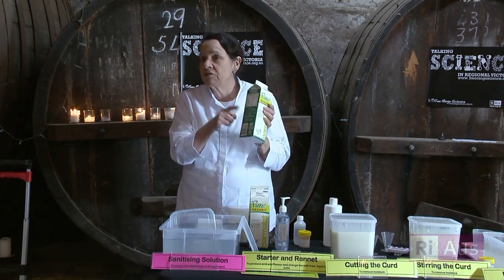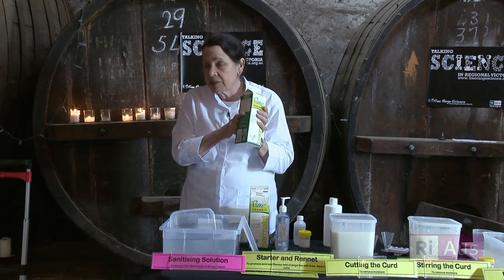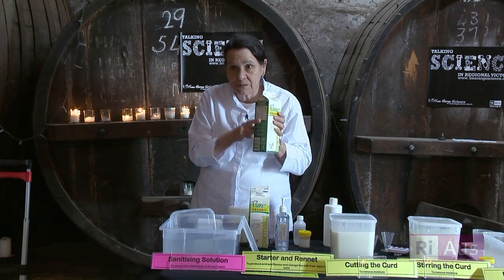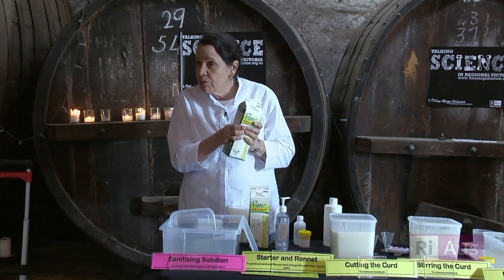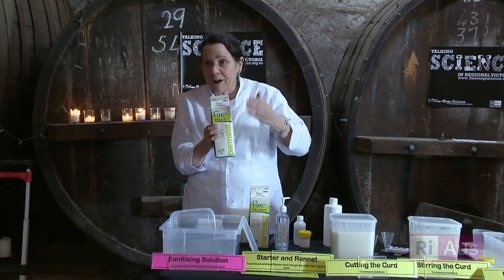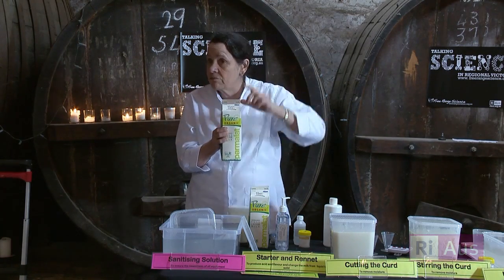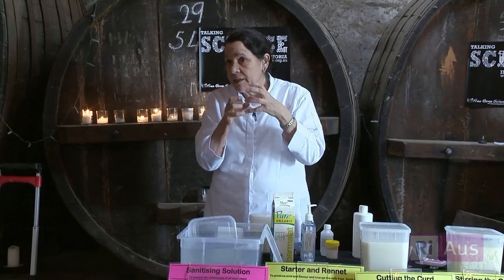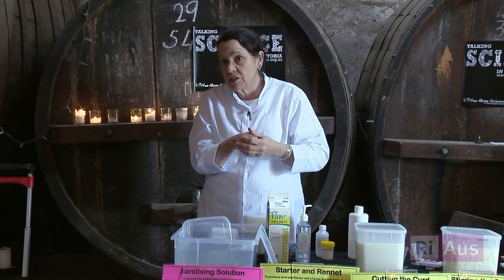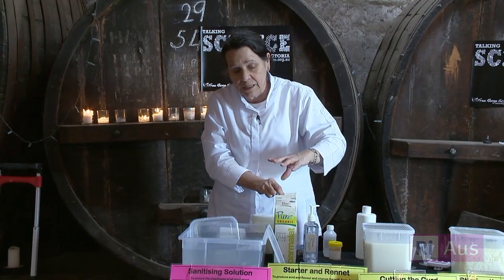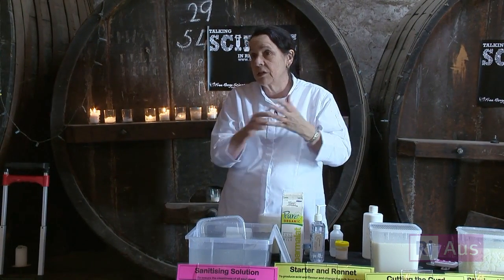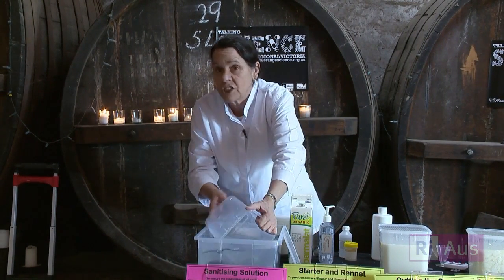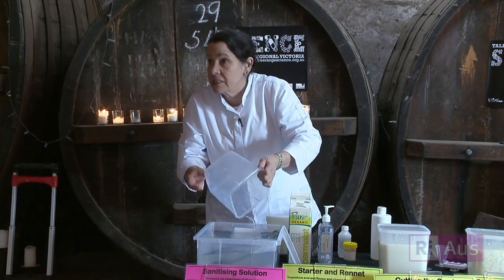The raw material we're using today is pasteurised and homogenised milk. Pasteurised is a heat treatment to destroy all known pathogens in the milk — organisms that can make you sick. Homogenisation is a process where we break down the fat globules so the cream doesn't rise to the top, by forcing it through a tiny nozzle. The problem for us in cheesemaking is that the proteins also go through that process and it changes them, so the rennet we try to add doesn't work on them.